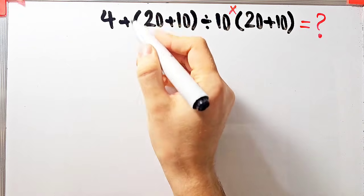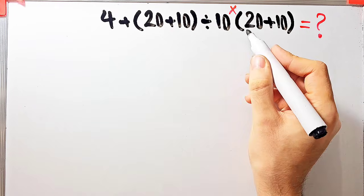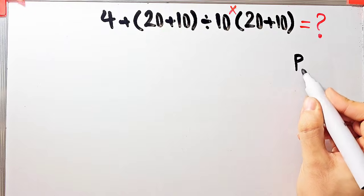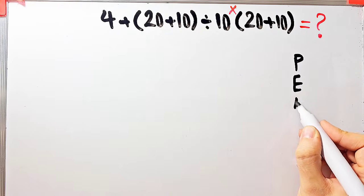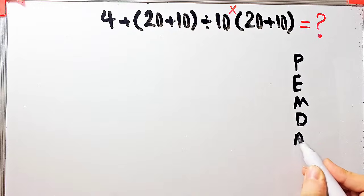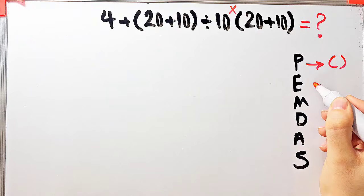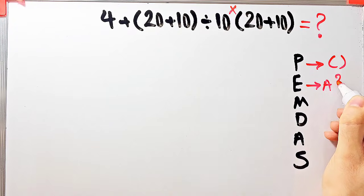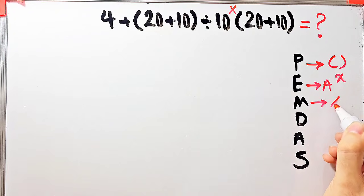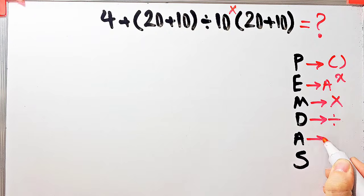Let's solve this step by step. We have addition, parentheses, division, and multiplication. We need to follow the order of operations — PEMDAS — which shows the priority of mathematical operations. P stands for Parentheses, E for Exponent, M for Multiplication, D for Division, A for Addition, and S for Subtraction.